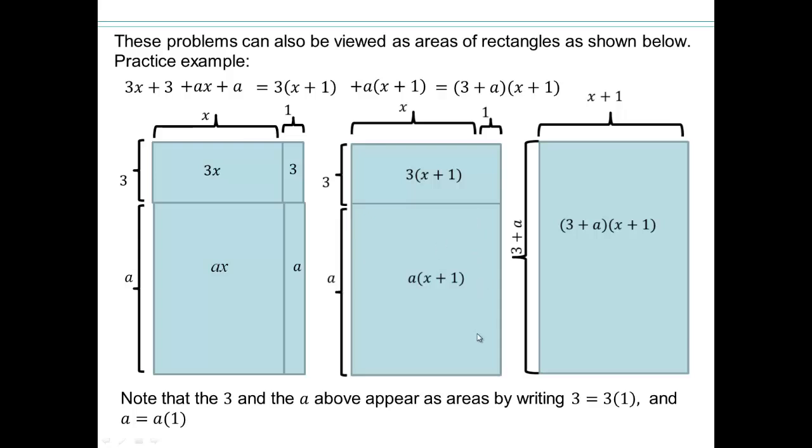We took away this division, which made that a times (x+1). We took away this division in the next step, and that made it (3+a) times (x+1) as area of this rectangle. All right.